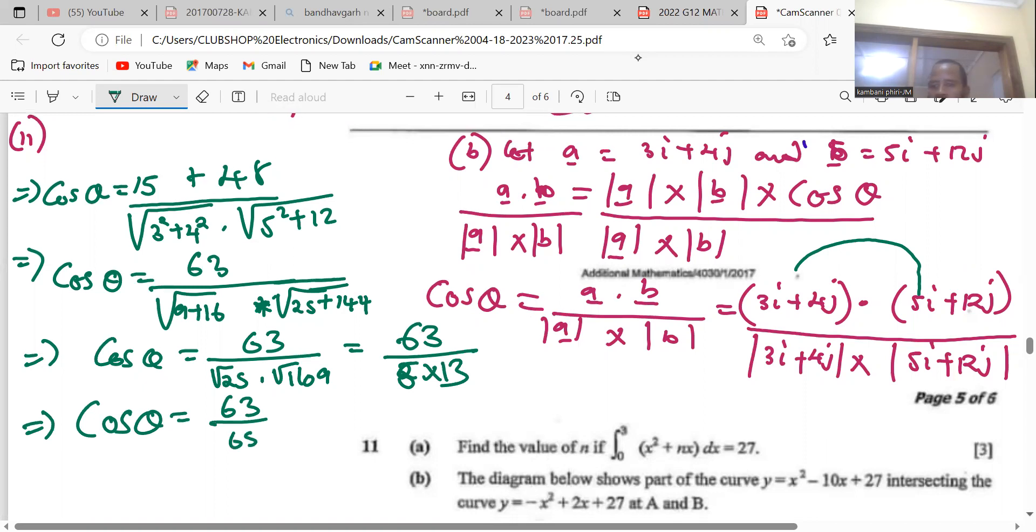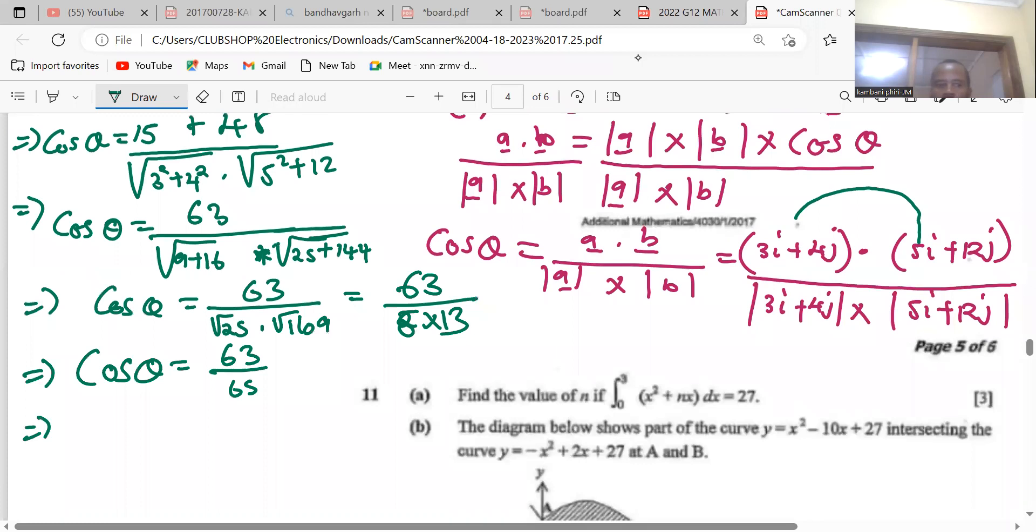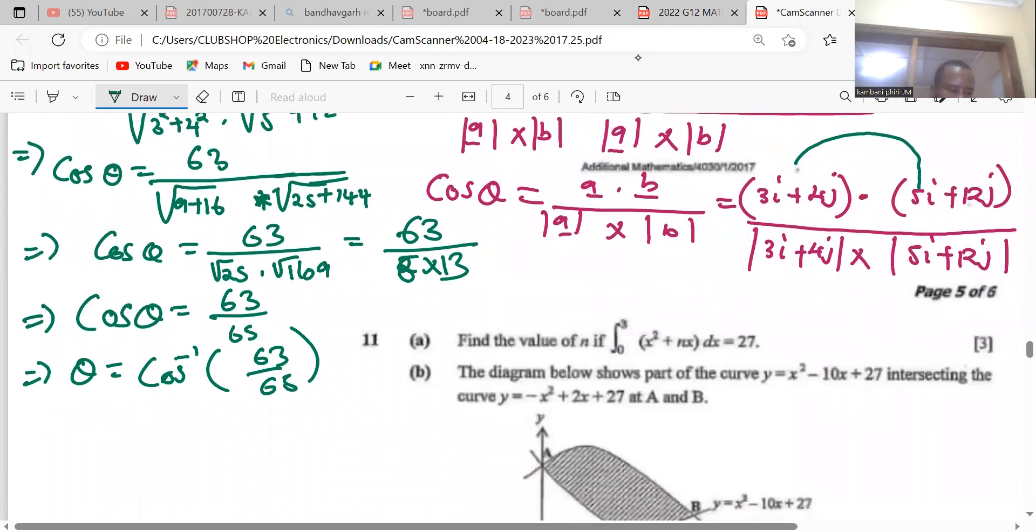So to find the θ, we're going to say θ is equal to cos inverse of 63 divided by 65, and eventually your answer will be 14.3 degrees. So that is how you're supposed to get that.